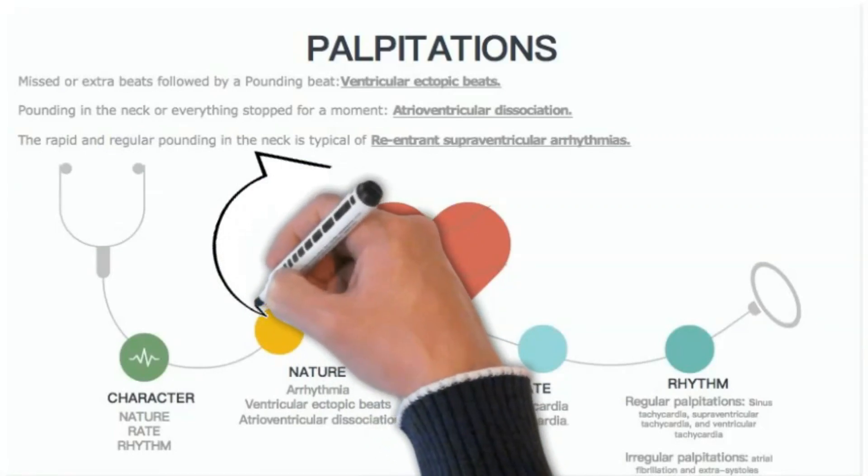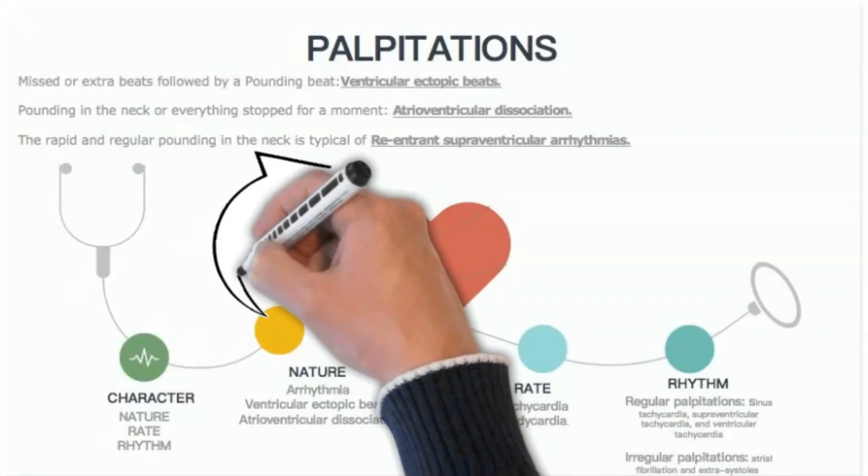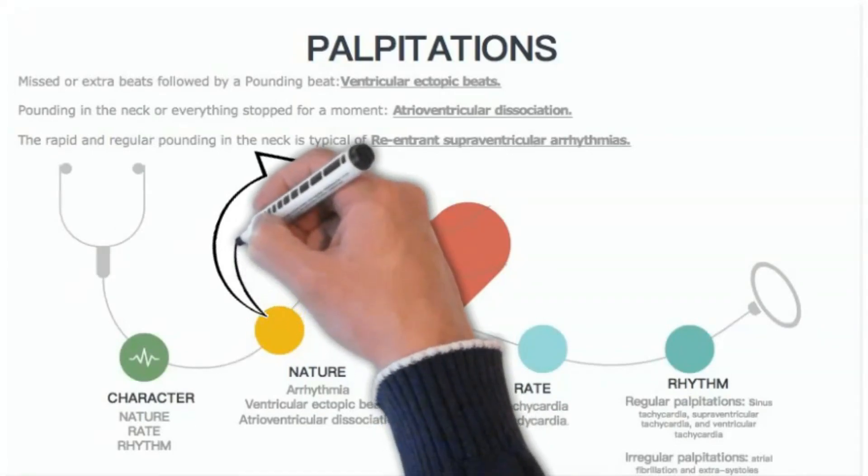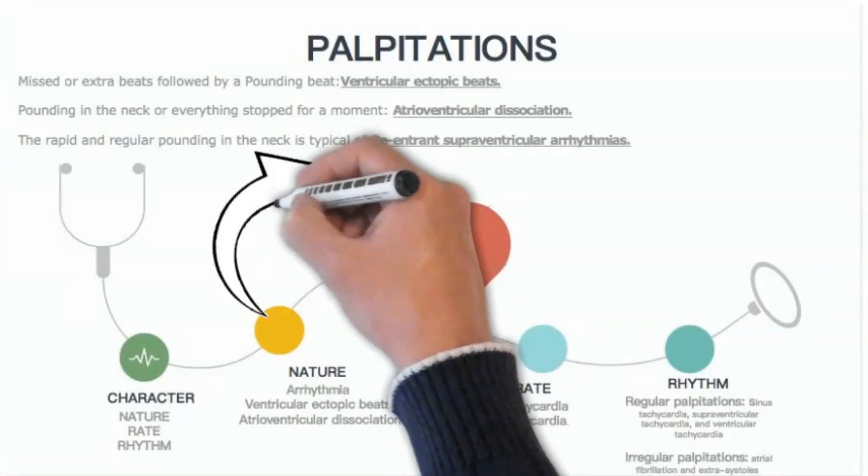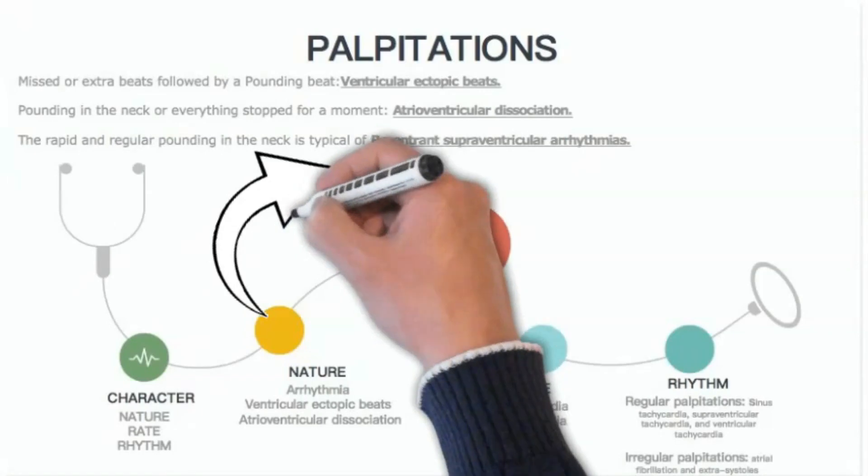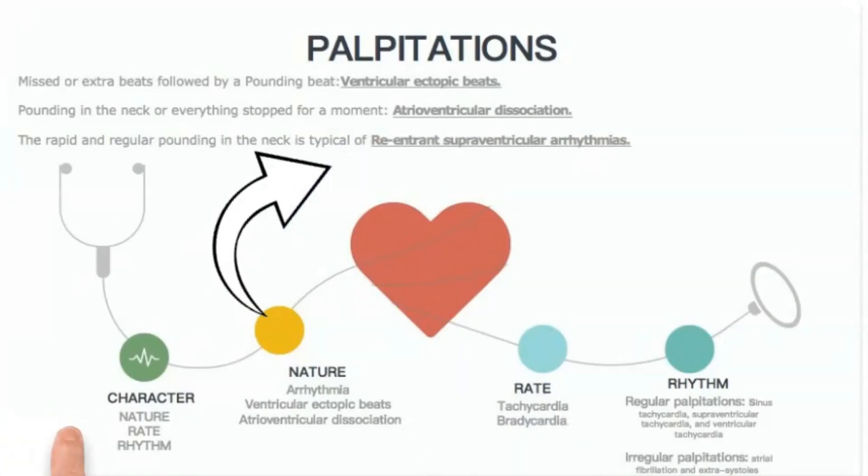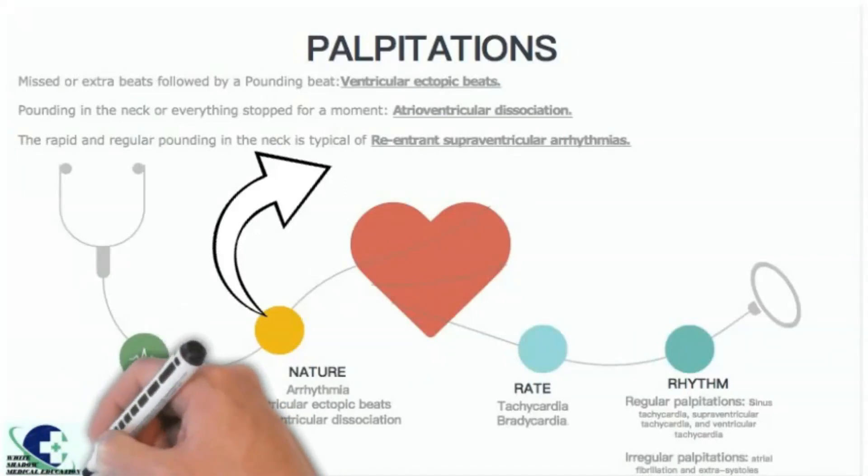Rate and rhythm. Are the palpitations fast or slow? Do you take your pulse at that time? If so, what was it? Are the palpitations regular or rapid? Regular palpitations suggest sinus tachycardia, supraventricular tachycardia, and ventricular tachycardia. However, irregular palpitations are suggestive of atrial fibrillation and extrasystoles.